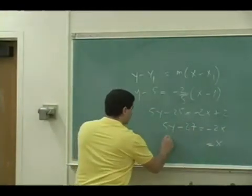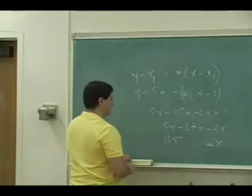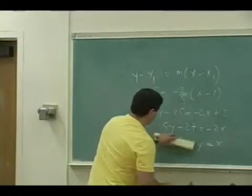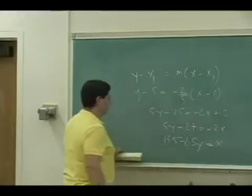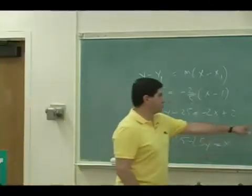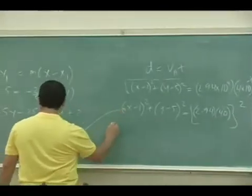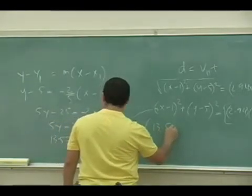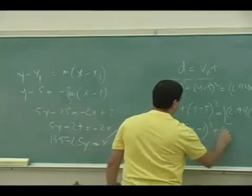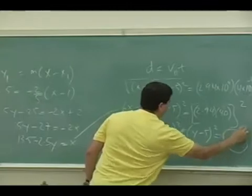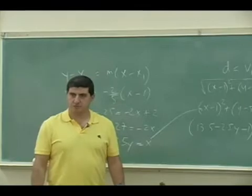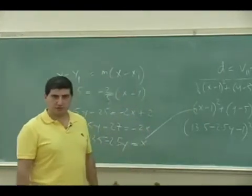Minus 2.5Y. So X is equal to 13 and a half minus 2.5Y. And then substitute that into this X and then put it into the equation solver for your TI, or if you want you could square it and do all the stuff yourself.